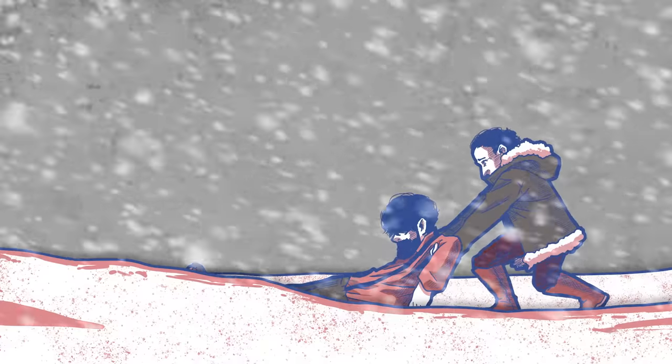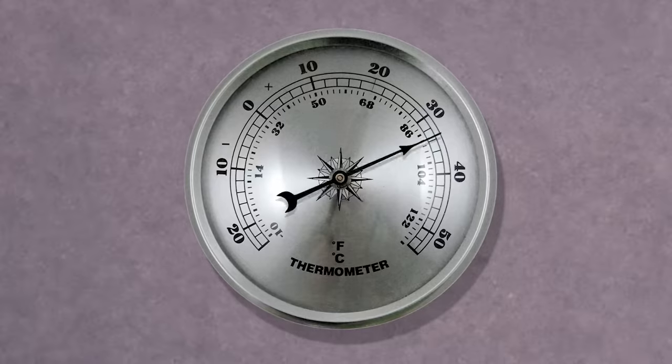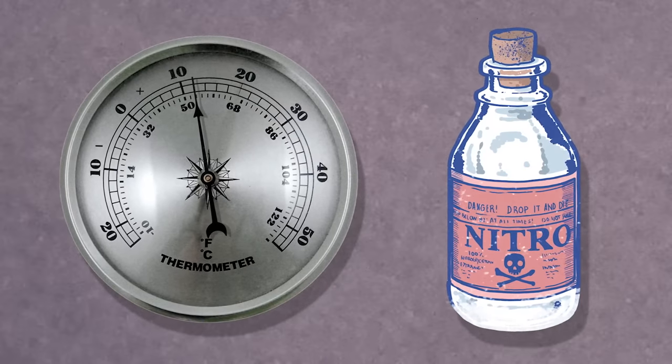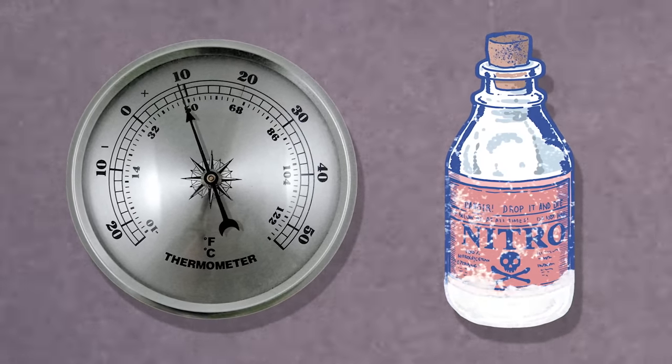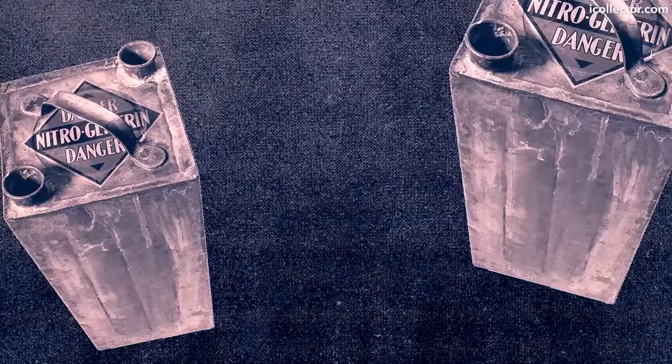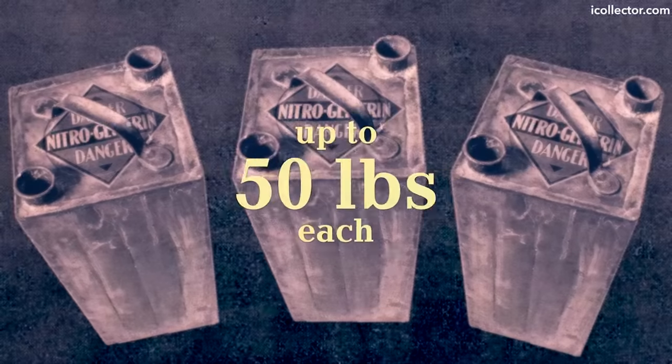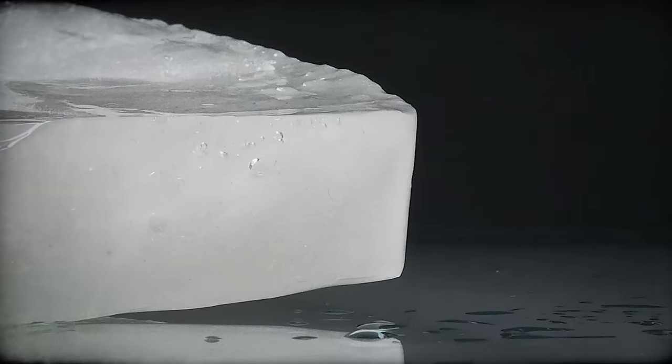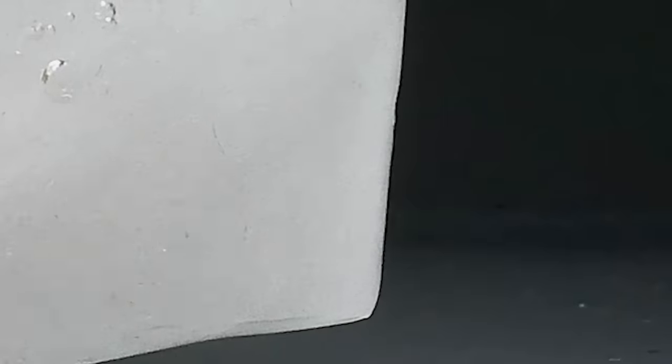The freezing point of nitroglycerin is unusually high, at 13 degrees Celsius. Frozen NTG is a little less reactive than liquid NTG. So in the time before dynamite, it was commonly shipped frozen inside large square cans that could weigh up to 50 pounds each. That isn't to say that the frozen form isn't explosive, it absolutely is.